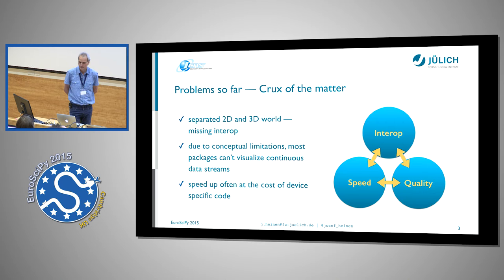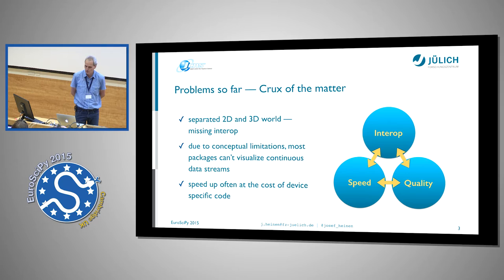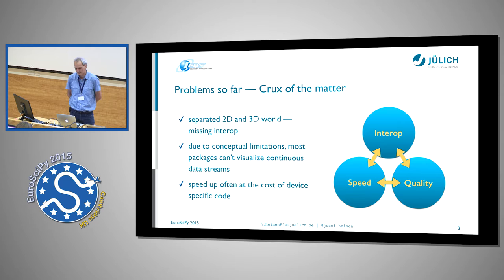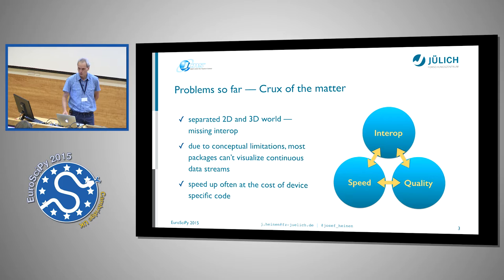The biggest problem is that we have a separated 2D and 3D world and there is some missing interoperability. It's a hard job to mix two-dimensional and three-dimensional graphics objects. And due to conceptual limitations, most packages are not able to visualize continuous data streams. And if you try to improve all these things, it's often at the cost of some device-specific code. Especially for Matplotlib, there is no chance to write such optimizations without getting into the backend-specific parts.